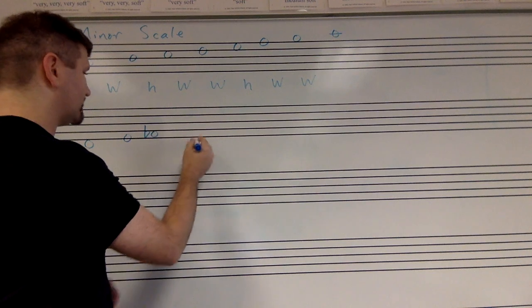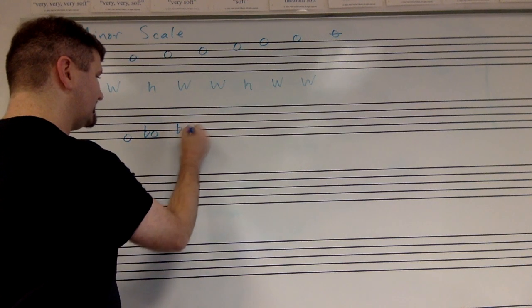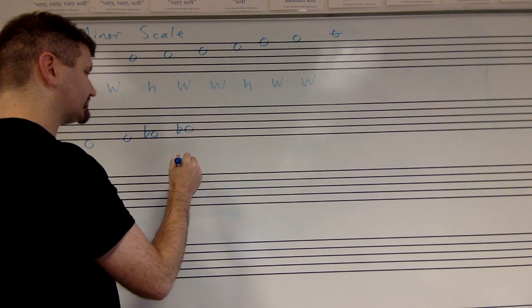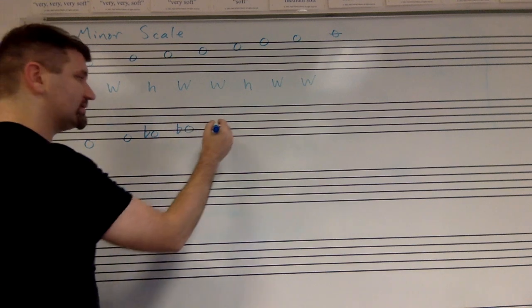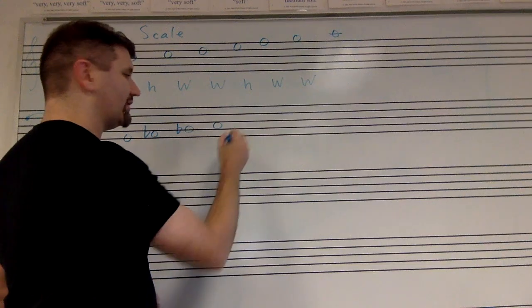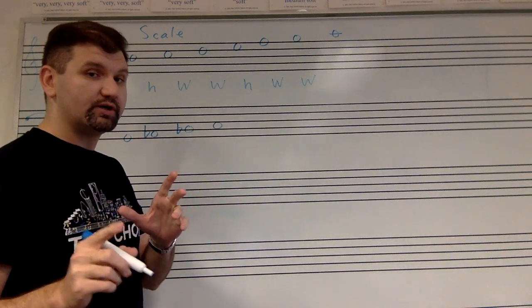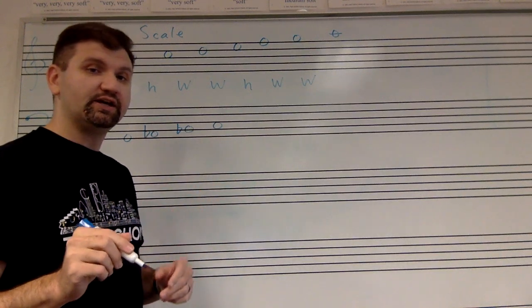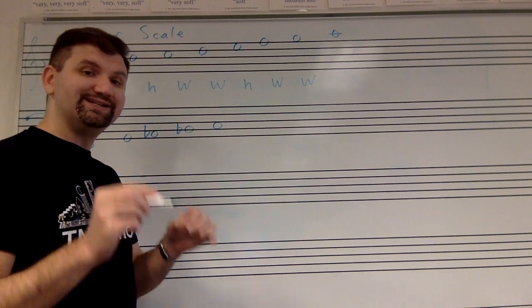Now, a whole step up from A flat would be B flat. And then a whole step up from B flat is C. Now we get to the next half step in our pattern, and we can't use C sharp, because we've already used C. So we have to use D flat.